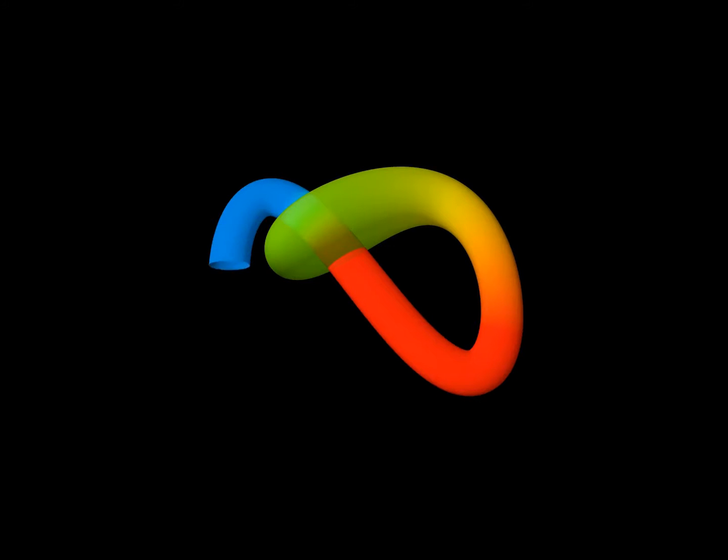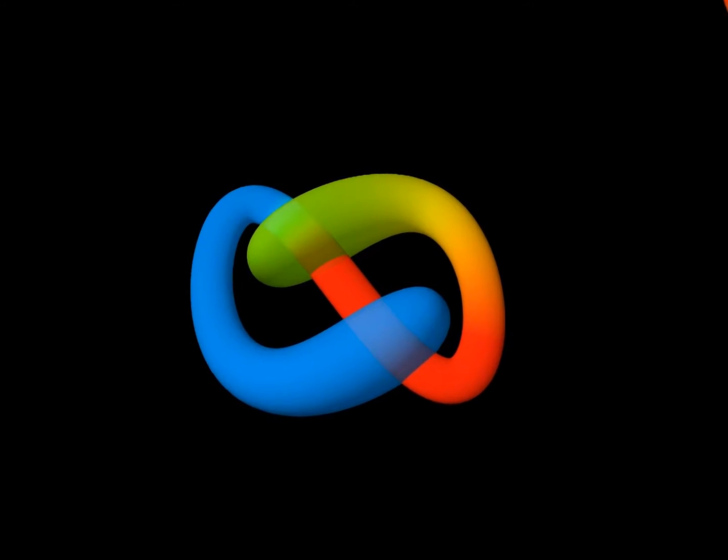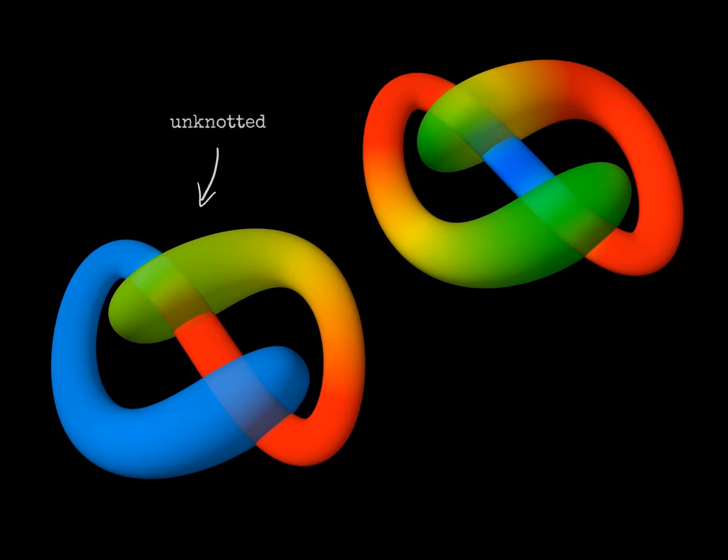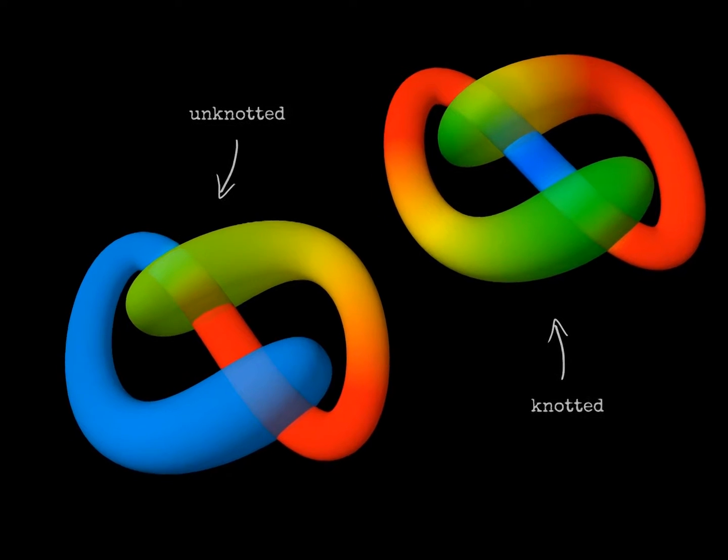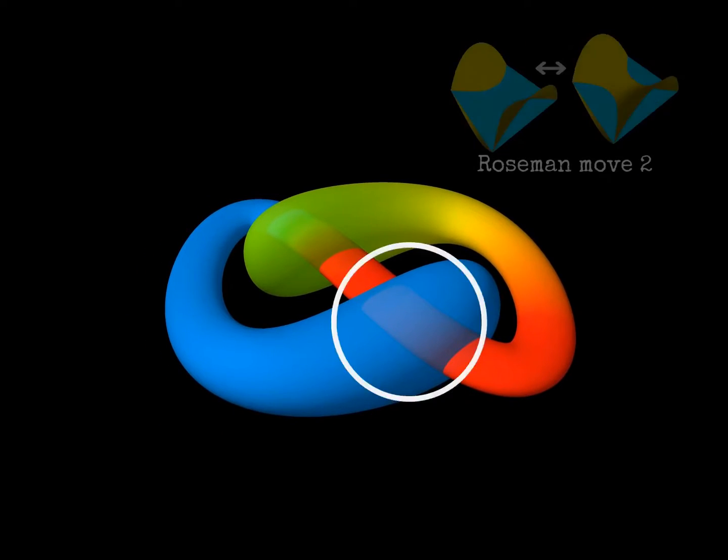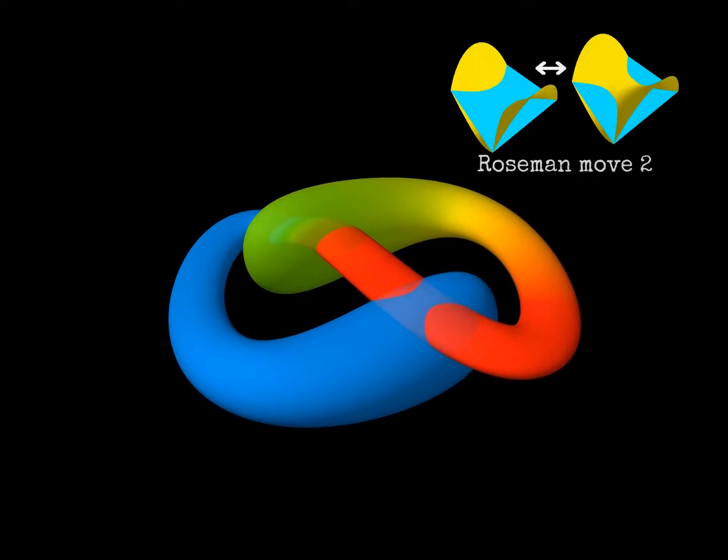We can use the Rosemann moves to show that this sphere is unknotted. It looks very similar to a sphere which we have already seen, but the color information is different. In fact, we will show later that the sphere on the right is knotted. We can use Rosemann move 2 to push the blue tube partly through the red one, joining two circles of double points.